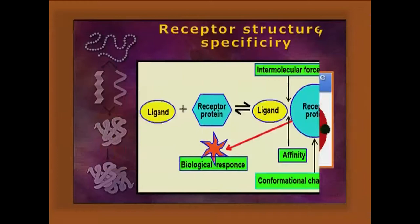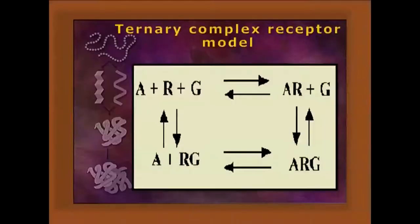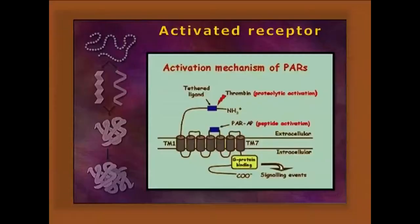Receptor theory: the postulates state that receptors are very structurally and sequentially specific towards ligand binding; they have high affinity towards ligand binding; after binding to ligand, changes in structure, biological conformation, and biochemical changes happen within the receptor; and it maintains saturable kinetics with a limit. There are two models: the two-state model and the ternary complex formation model. In the two-state model, not only the ligand and receptor but also the activated receptor R* is present.